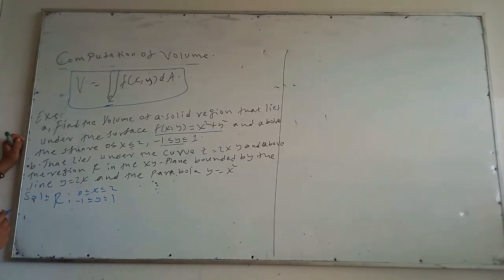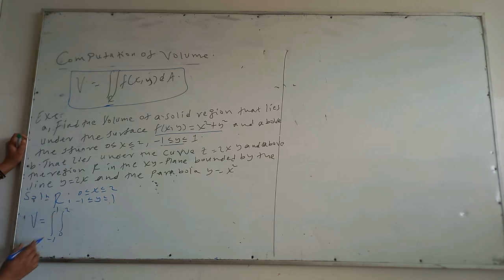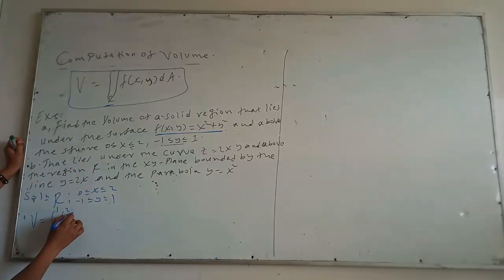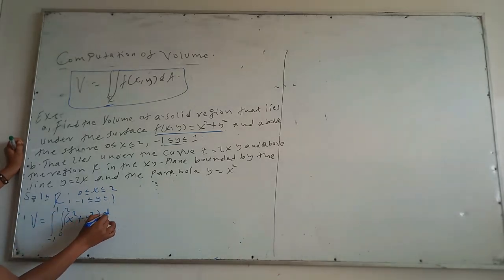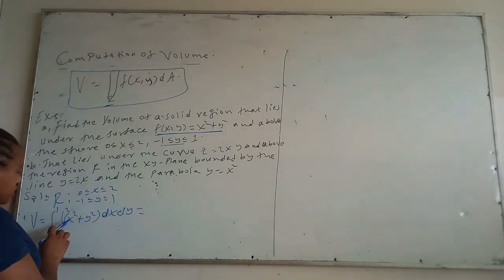The volume of the solid will be found as a double integral over R. The limits are: y from -1 to 1, x from 0 to 2. The function f(x, y) is x squared plus y squared, so we integrate dx dy.